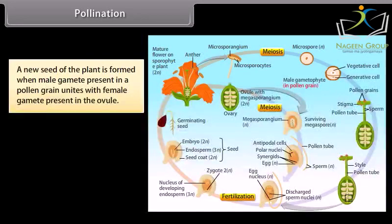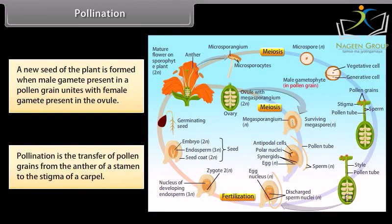Pollination. A new seed of the plant is formed when male gamete present in a pollen grain unites with the female gamete present in the ovule. Pollination is the transfer of pollen grains from the anther of a stamen to the stigma of a carpel.